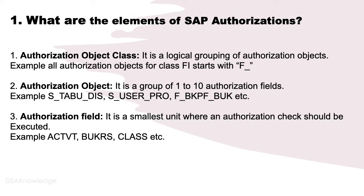Number 3: Authorization field. It is the smallest unit where an authorization check should be executed. Examples include ACTVT, BUKRS, CLASS, etc.